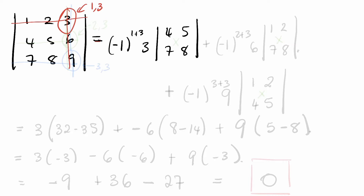Moving down the column, we look at 6. The element 6 is in the second row and the third column. So the next term is (-1)^(2+3) times 6, times the determinant of what's left when we erase that row and column — which is det[1, 2; 7, 8].